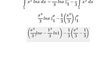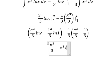Now we simplify: ln(e) equals 1, ln(1) equals 0, so we cancel this one. Negative 1/3 with the 3 gives us negative e³ over 9.